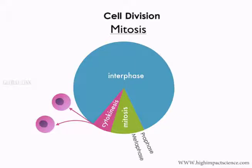Prophase, metaphase, anaphase, and telophase. These stages are not distinct, but occur in a smooth continuous sequence so that each stage merges into the next and the events often overlap. It is important to note that the cell undergoes mitosis to form two nuclei and then divides into two individual cells by the process called cytokinesis.